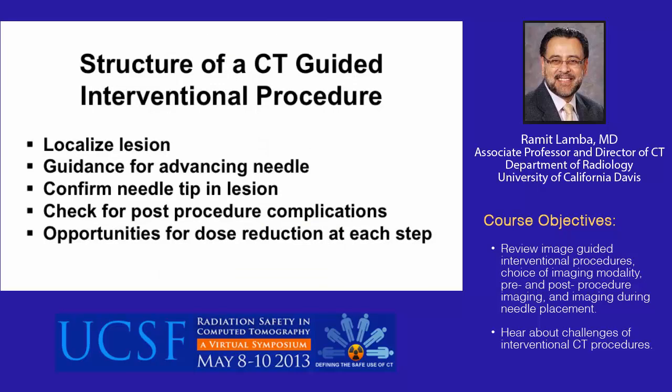In this slide, I summarize the structure of a CT-guided interventional procedure. Initially, a localizing scan is obtained to localize the lesion being targeted. Multiple sequential CT scans are then obtained during the course of the procedure, both while the needle is being placed and finally to confirm the needle tip within the lesion. At the end of the procedure, a CT is performed to check for any complications. It is important to emphasize that each of these steps offers an opportunity for dose reduction.